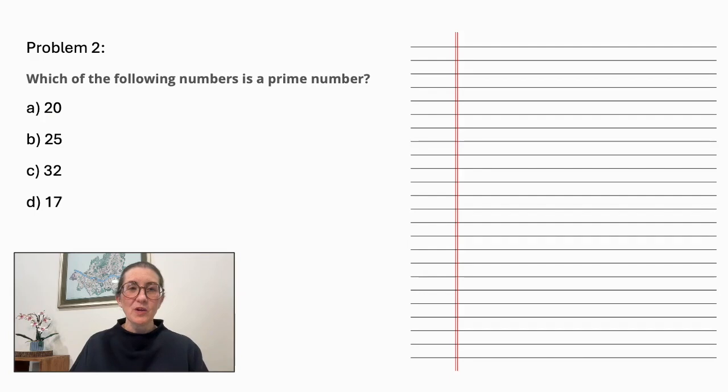Problem number 2. Which of the following is a prime number? What is a prime number? A prime number is a number whose factors are only 1 and itself.